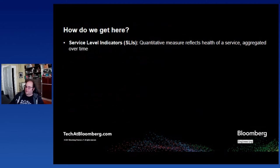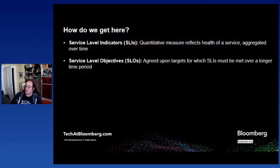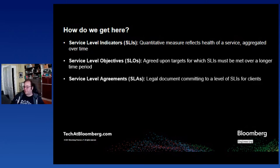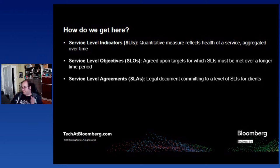How do we get here? Let's put some definitions around this. Service level indicators are special metrics — they are metrics that are important to your clients, and they are quantitative measures reflecting the health of the service aggregated over time. They're observable and of concern to your clients. SLOs are agreed-upon targets. Service level objectives are agreed-upon targets for which the service level indicators must be met over a longer time period. Service level agreements are legal documents committing to a level of SLIs for clients. I will not be talking further about service level agreements, other than to say they usually have penalties and they usually involve lawyers. I'm not a lawyer. I'm not your lawyer. They're a whole topic in and of themselves.